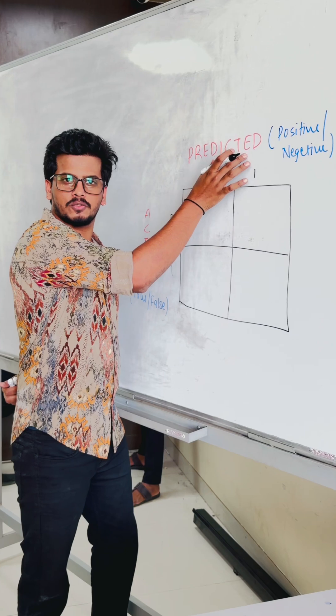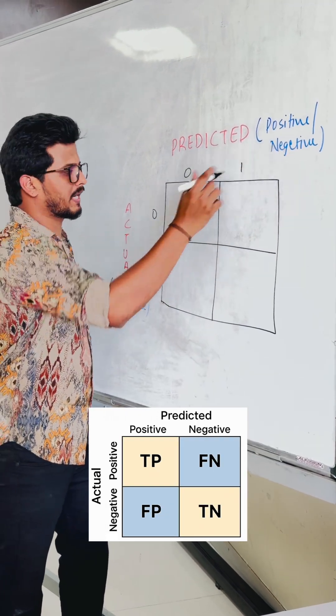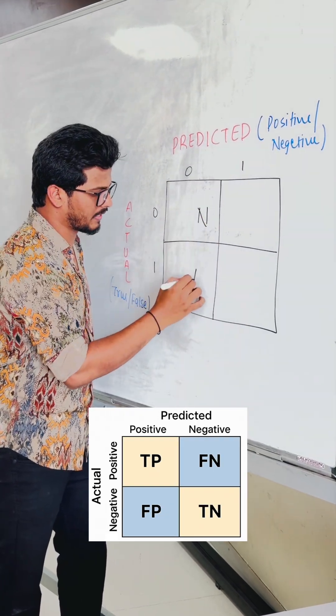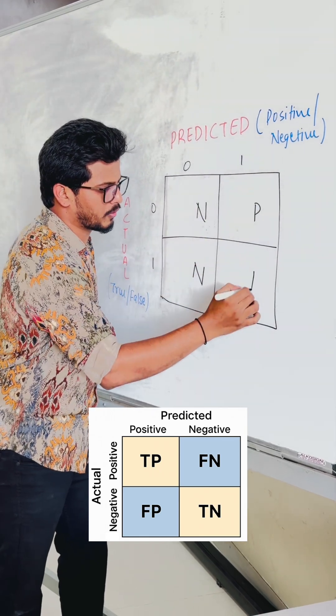First, we will see predicted class. In the predicted class, 0 means negative. So this is negative and this is negative. And this is positive and positive.